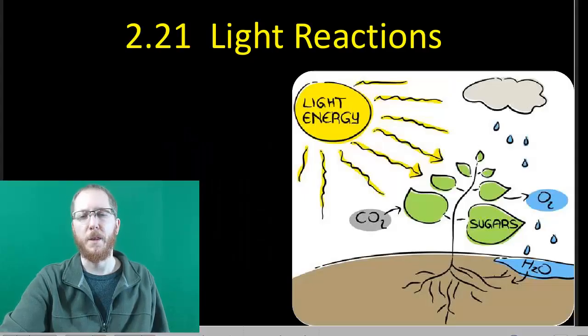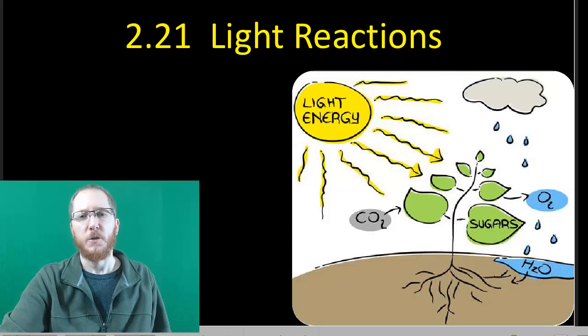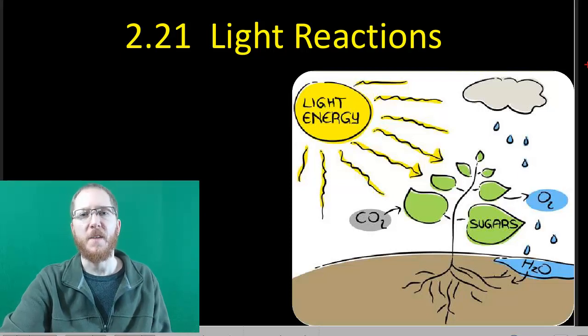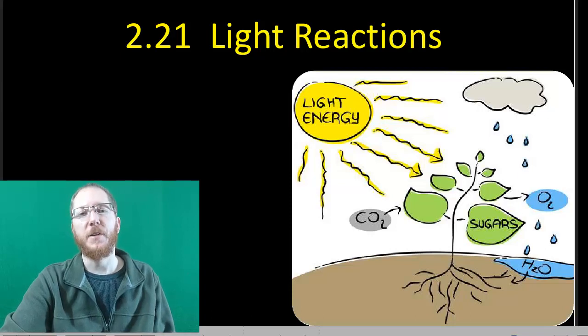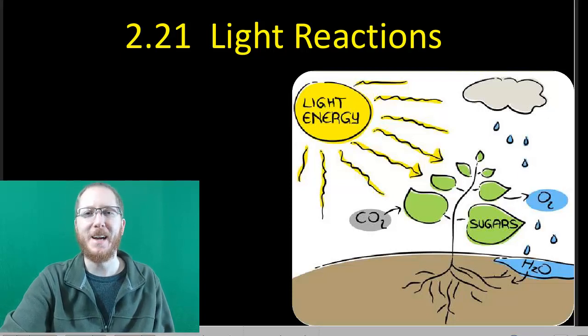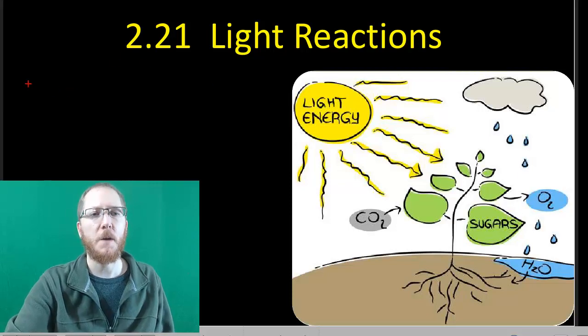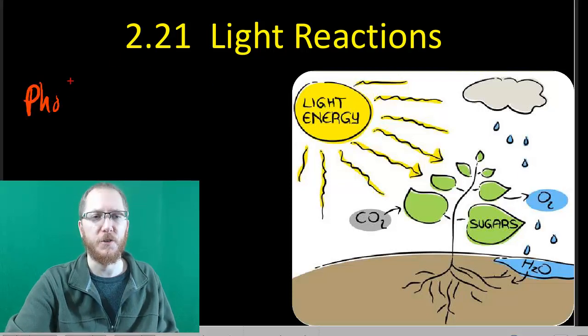Welcome to section 2.21, the light reactions. So in photosynthesis we've got two basic parts to the reactions. We've got the light reactions and we've got the dark reactions. The dark reactions will commonly be called the Calvin cycle, and the light reactions, when we talk about them, you'll see the word photosystems.